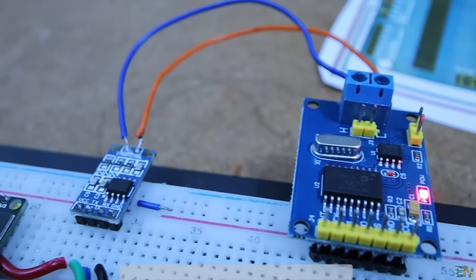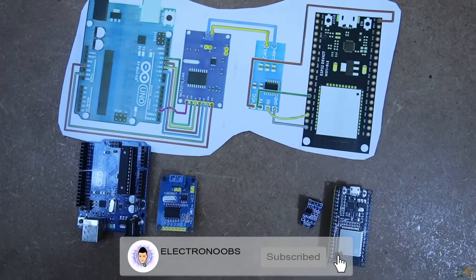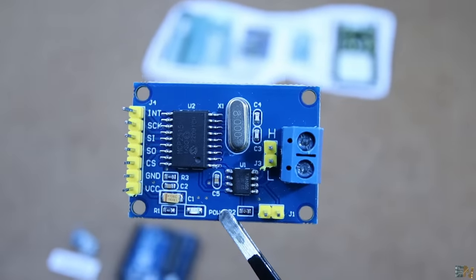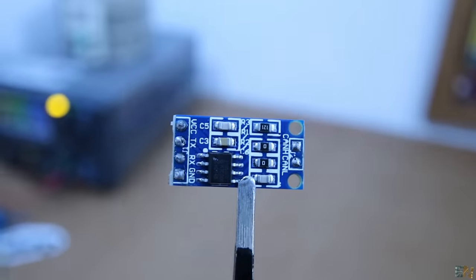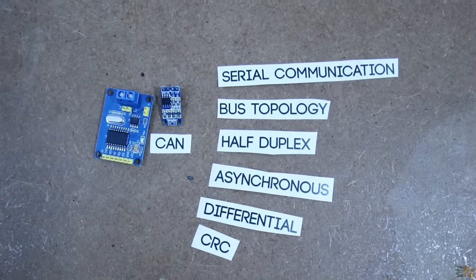So guys, I hope that you now know how CAN communication works and how to implement one using Arduino or ESP32. For the code, the schematics, the modules that I've used and the libraries, check electronops.com for the full tutorial. Thanks again and see you later guys.